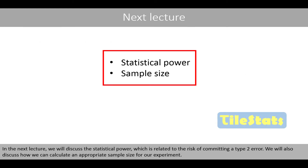In the next lecture, we will discuss the statistical power, which is related to the risk of committing a type 2 error. We will also discuss how we can calculate an appropriate sample size for our experiment. Thanks for watching!